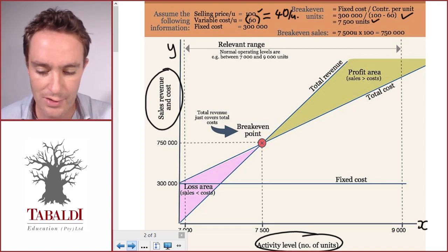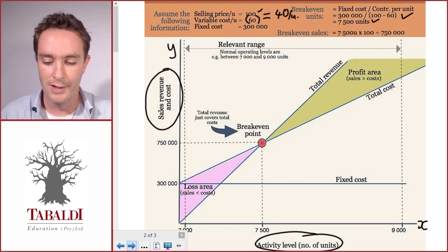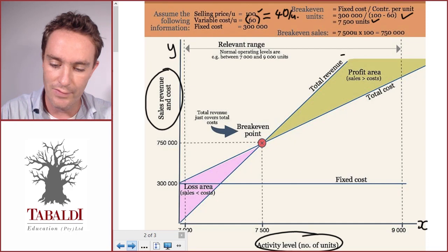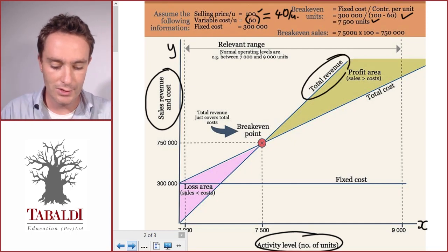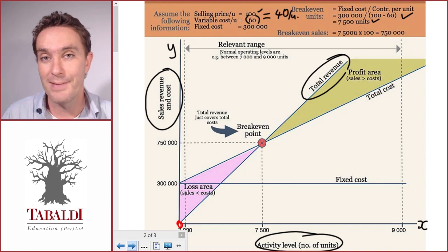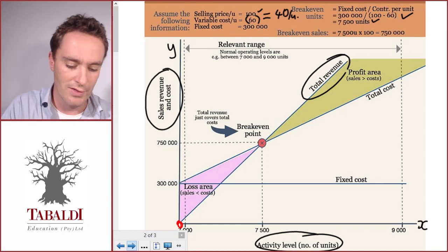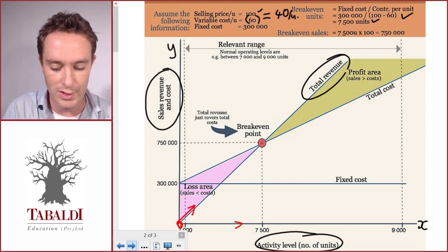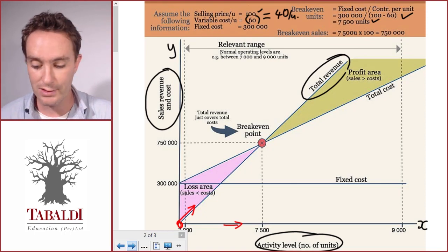Let's see how this shows up on the graph. The first line I want you to look at is the total revenue. Total revenue starts here at zero, which makes sense because if we don't sell anything we're not going to earn any sales revenue. Then it increases in direct proportion to the number of units we sell.